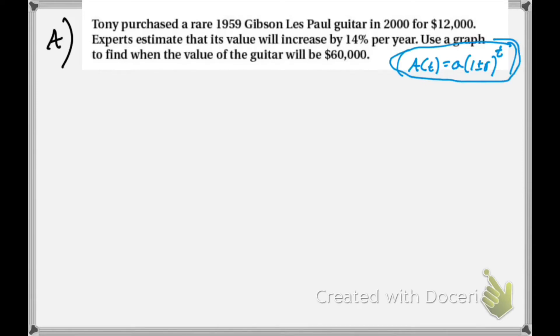So our first example: Tony purchased a rare 1959 Gibson Les Paul guitar in 2000 for $12,000. Experts estimate that its value will increase, there's a keyword there, increase by 14 percent per year. So in 2000 he spent $12,000 on the guitar. The value will increase by 14 percent every year. So the question that we're supposed to solve for is use a graph to find the value of the guitar or when the value of the guitar will be $60,000.